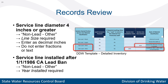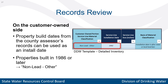Line size is required for service lines based on pipe diameter, and the year installed is required for service lines based on installation after the lead ban. For customer-owned portions of a service line, property build dates can be used as an installation date, so lines serving properties built after the lead ban can also be considered non-lead other.